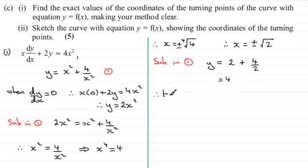So therefore, we've got turning points at the points with coordinates where x equals minus root 2, and y equals 4. And we've got another turning point at root 2, and then y equals 4.